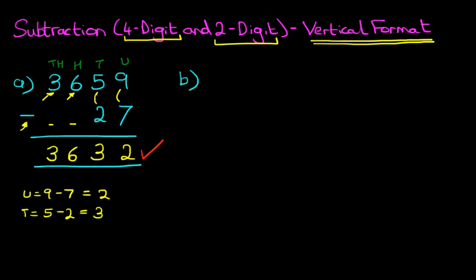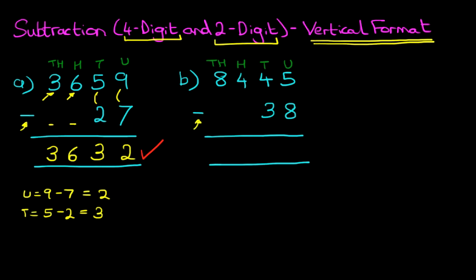Now let's work through our second example. This time we have 8,445 minus 38. Again, I'm going to label the columns. Units, tens, hundreds, and thousands. We are now ready to go ahead and do the subtraction. So let's start, as we always do, on the right-hand side first. The units.